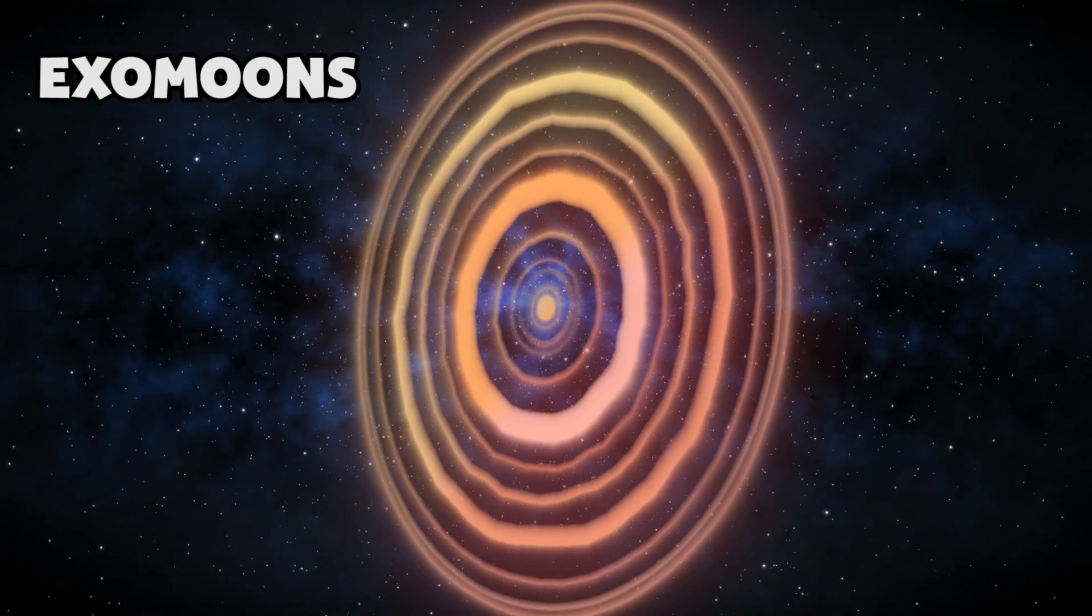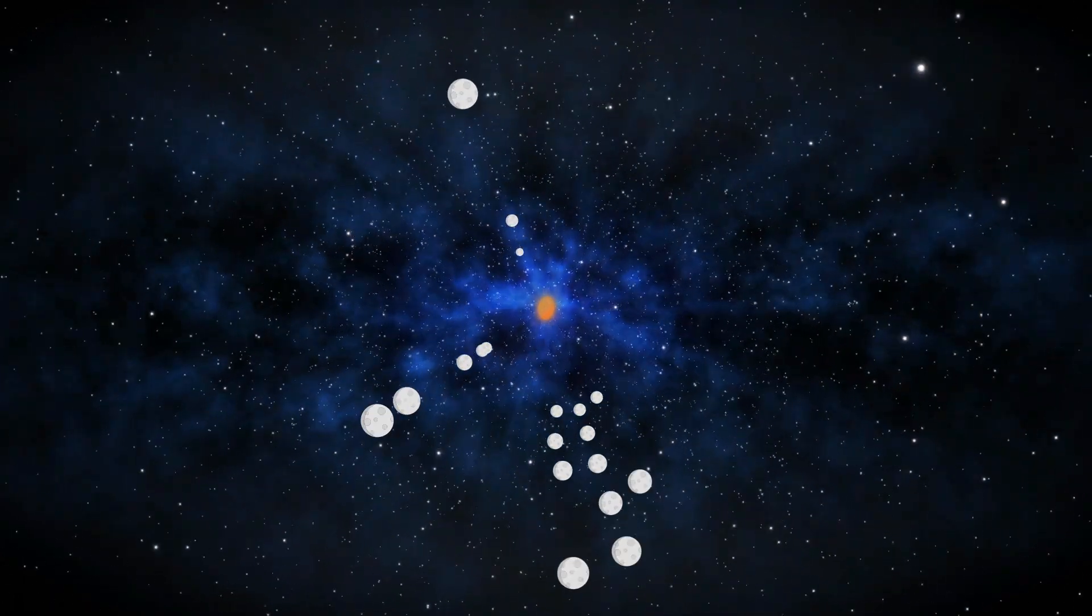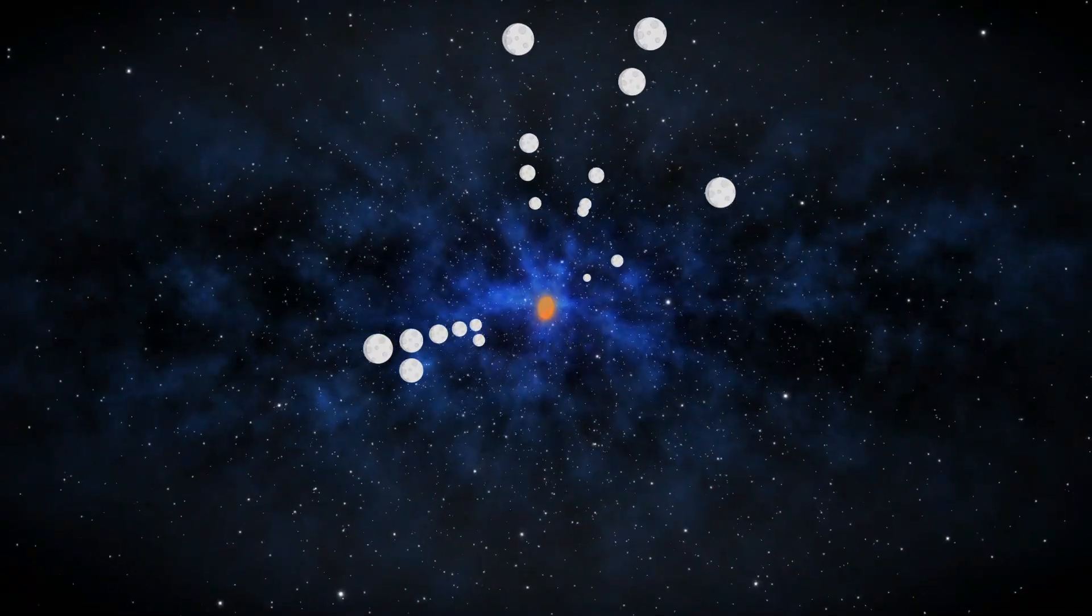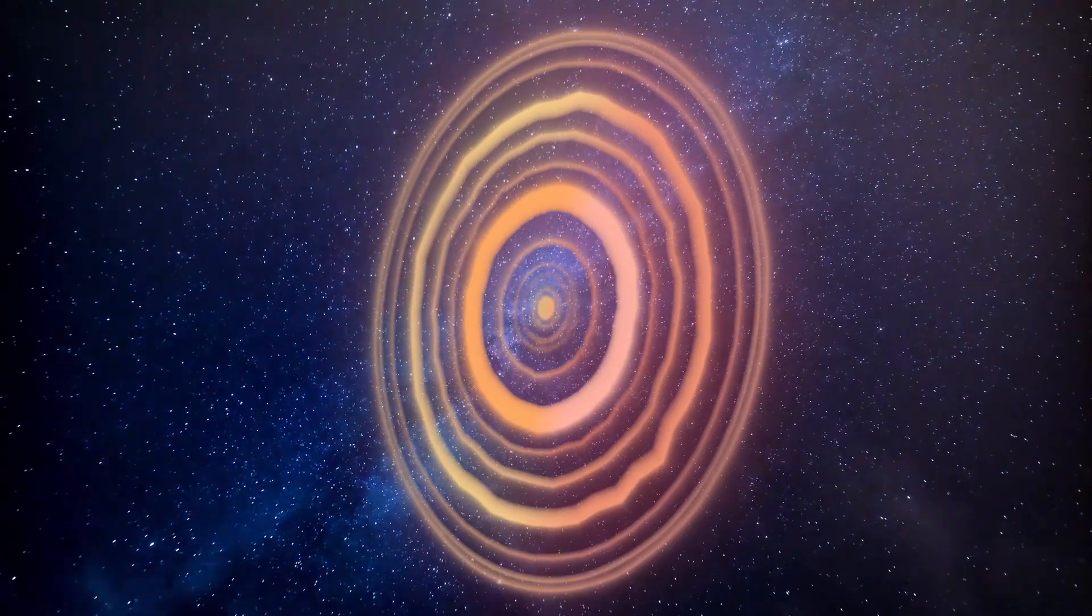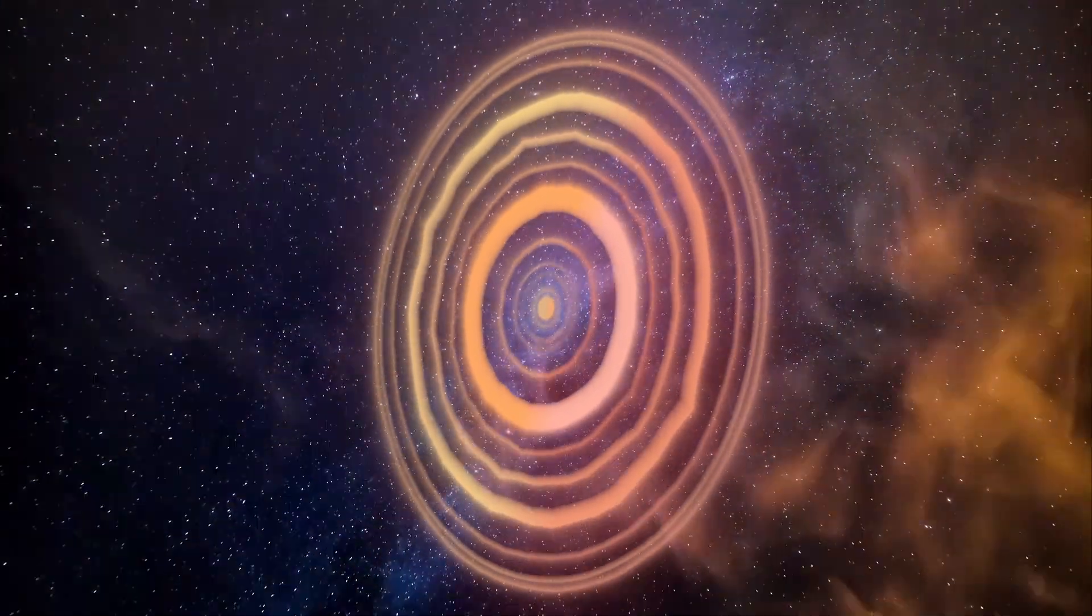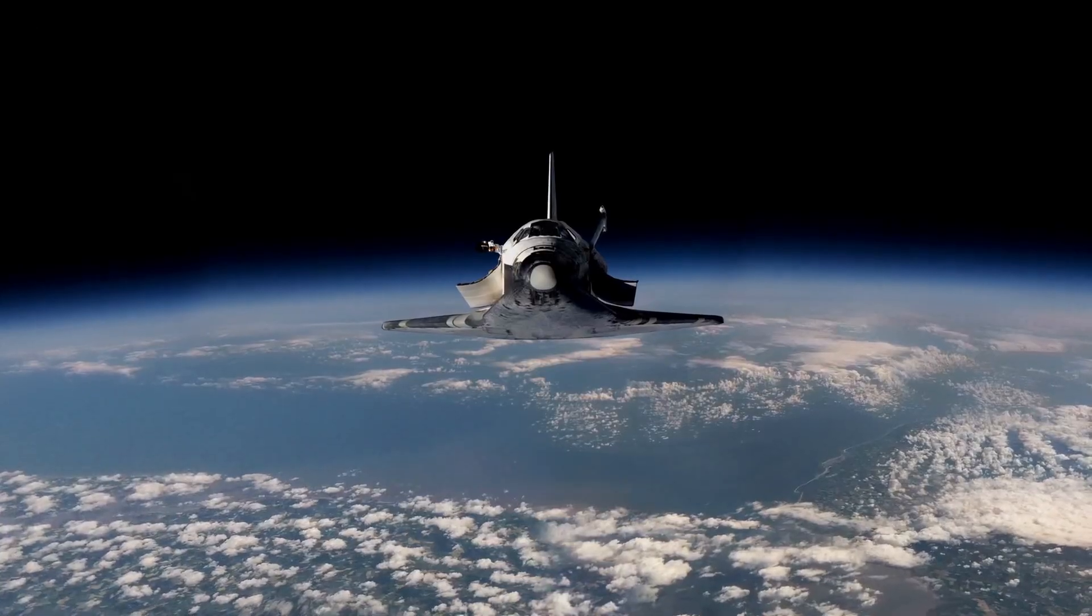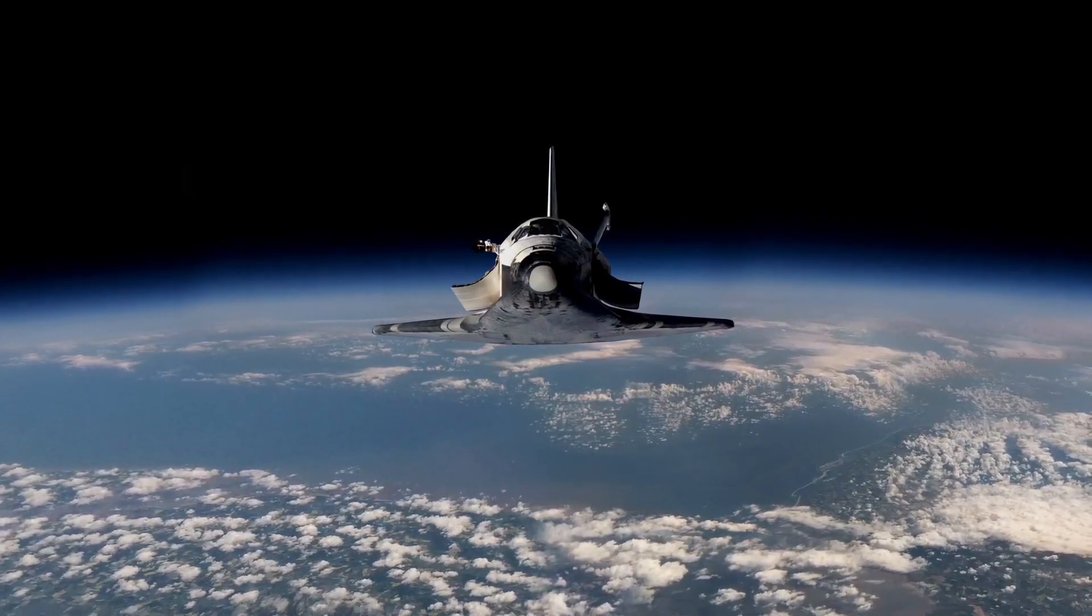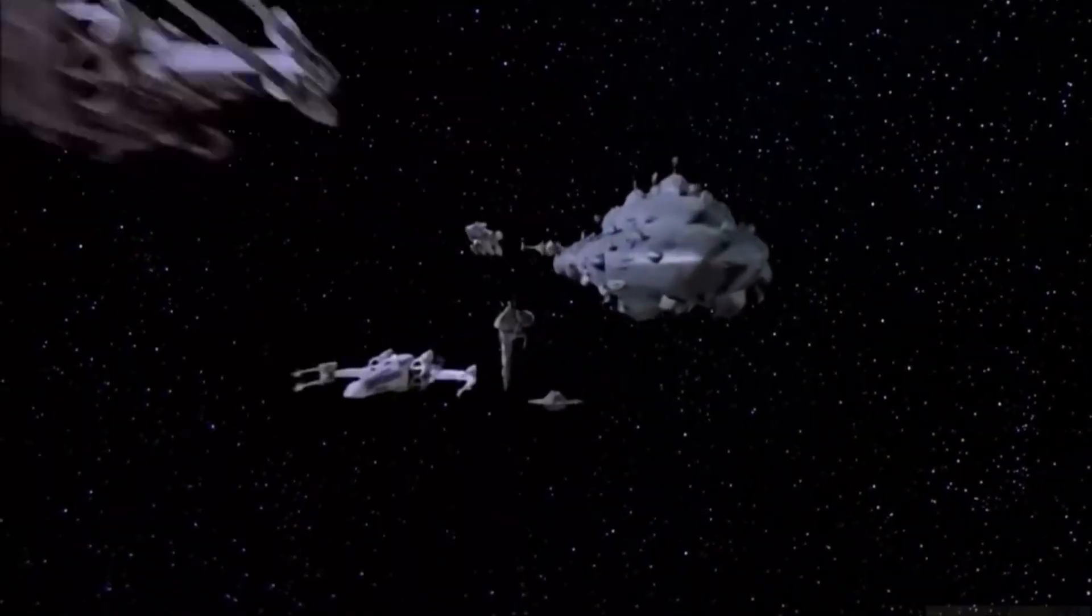As years go by, astronomers predict that these rings will eventually dissipate and disappear millions of years from now, forming several exomoons that will orbit around J1407b. For now, the rings of this planet will stay for several thousands of years. Maybe during that time, we'll have the technology sufficient enough for us to travel to J1407b and gaze upon its wondrous rings up close.